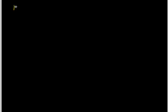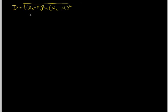In the last video we derived the formula D equals the square root of (Easting 2 minus Easting 1) squared plus (Northing 2 minus Northing 1) squared. This is essentially the Pythagorean theorem replaced with surveying terminology — Northings and Eastings.